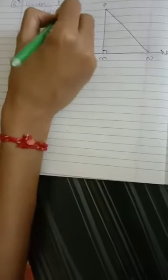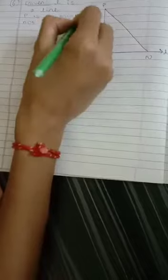So, we have to prove that PM is smaller than PN. Given is L is a line, P is a point not lying on L.